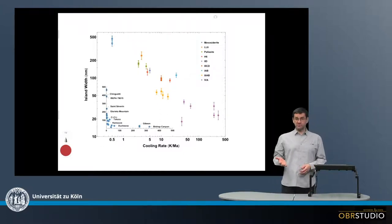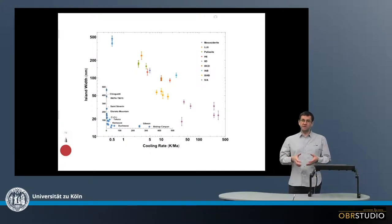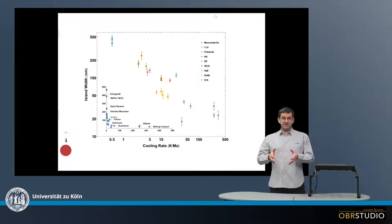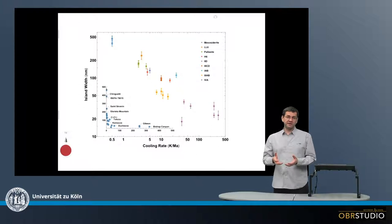All the iron meteorites, when they're formed, they're once molten. They might have been the core of an asteroid, or at least there have been a separated phase within the asteroid that then cooled down.